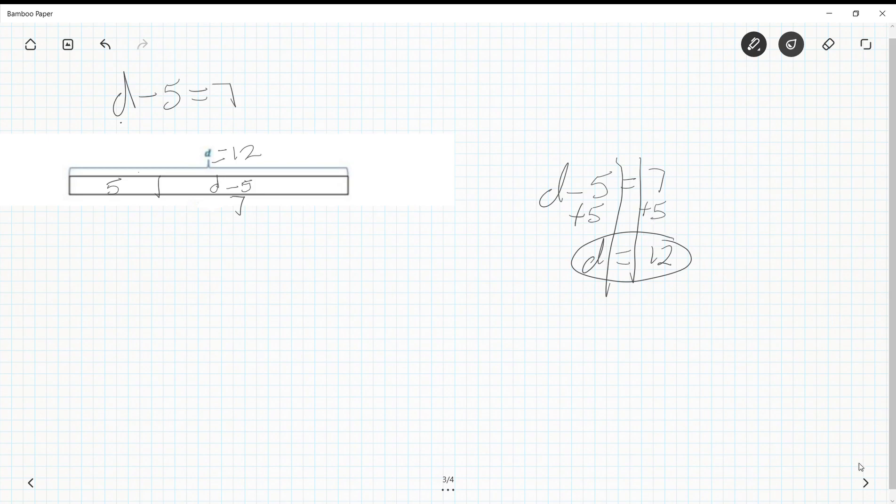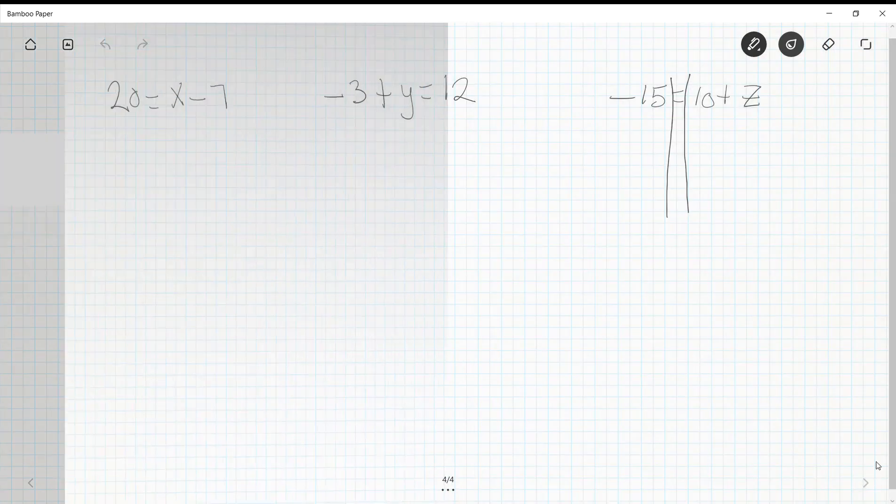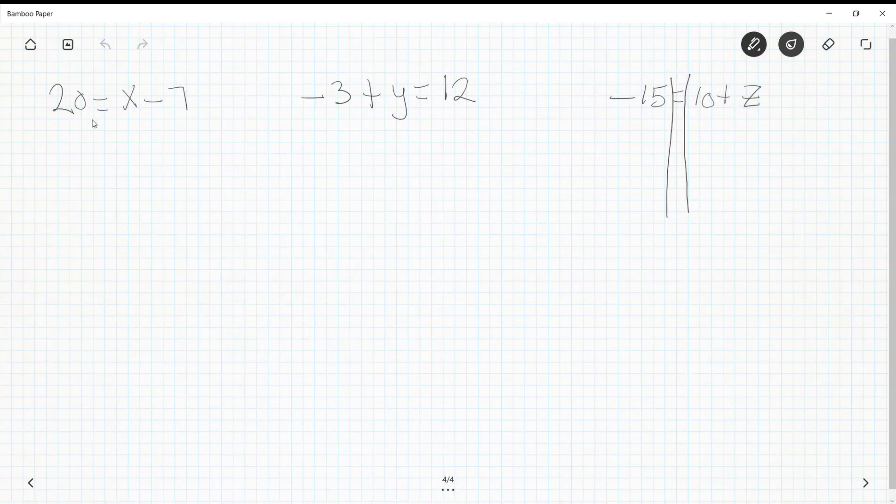more algebraic way. Now let's look at a few other examples, some that involve negative numbers. 20 equals x minus 7. Negative 3 plus y equals 12. And negative 15 equals 10 plus z. Now if there's no symbol in front of a number we have to assume that it is positive, so positive 20. And if there is a symbol in front, by in front I mean to the left, this is a negative 7. So if I were to